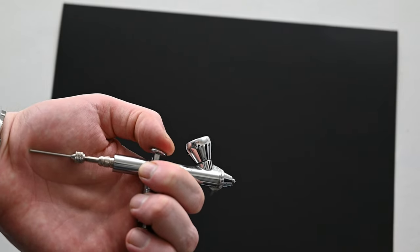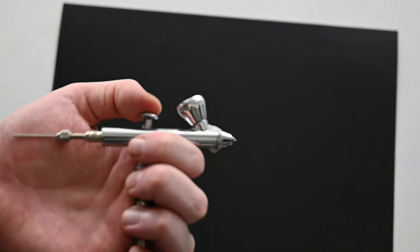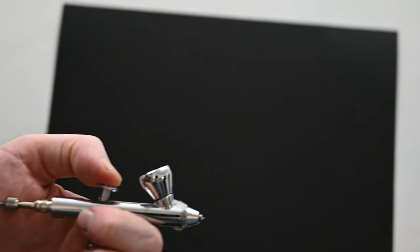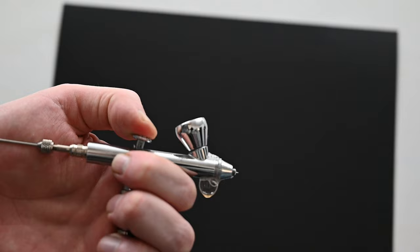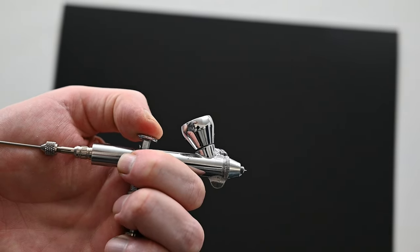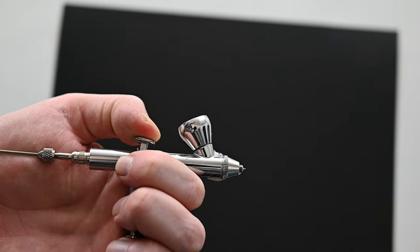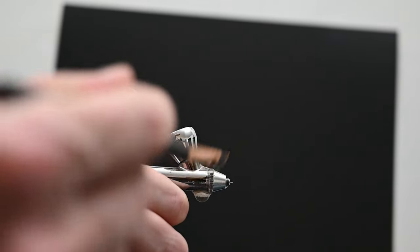When I use some soapy water to check the nozzle for some leaks, unfortunately this airbrush is not good. I even tested this a few times off camera and I tightened the nozzle using some soft jaw pliers. And unfortunately this nozzle leaks a lot. So if you pick this one up, you're also going to have to buy some beeswax and add that onto the threads to seal it out.